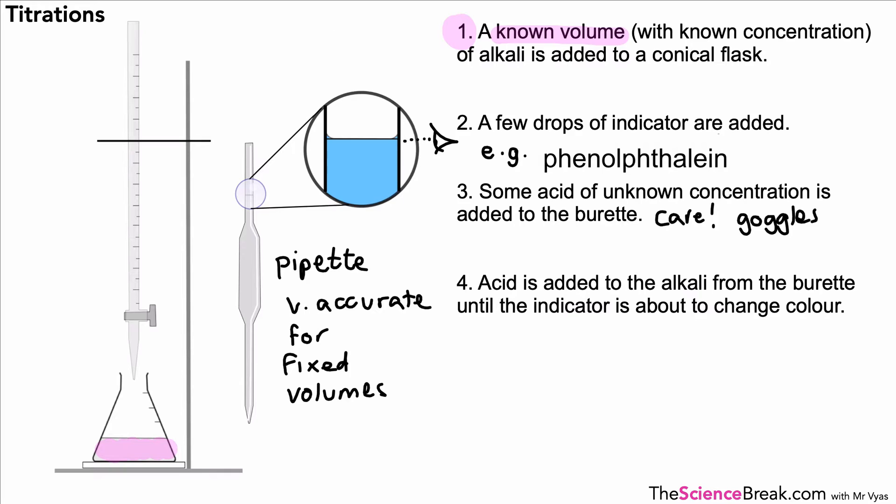And then the next step is acid is added to the alkali from the burette until the indicator is about to change color. Acid is being added by opening the tap. Once we can see it's about to change color, the acid is added more slowly until the color of the indicator changes.